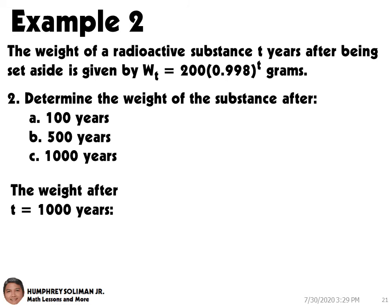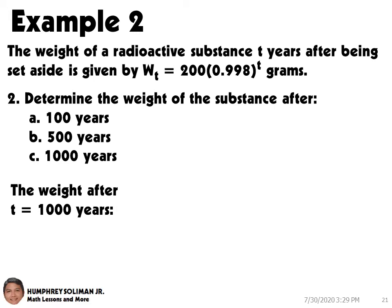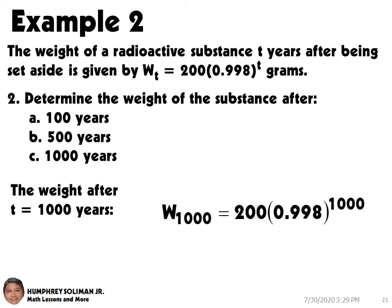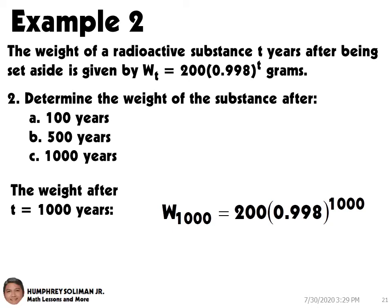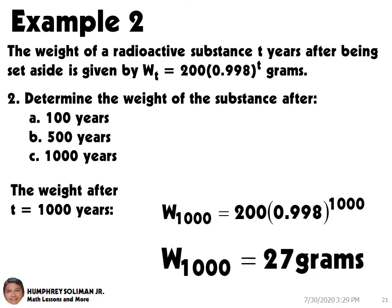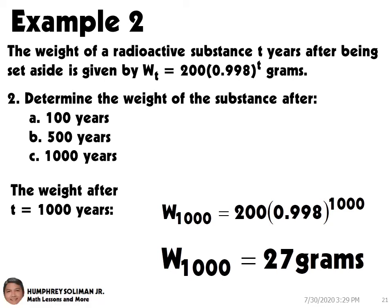Next, in number 2c, the weight after 1000 years is when T equals 1000. So if we substitute T equals 1000 in the equation used to model the weight of the radioactive substance, we will get W1000 equals 200 times 0.998 raised to 1000. Therefore, the weight after 1000 years is W1000 equals 27 grams.